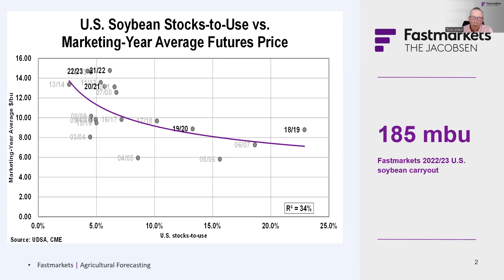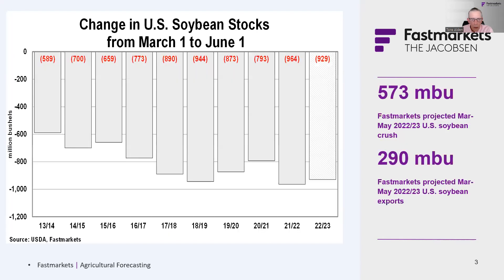This is generally the change from second quarter stocks to third quarter stocks. What we have built in is not necessarily a record drawdown from Q2 to Q3, but it's certainly historically high. It includes almost 575 million bushels of crush and 290 million bushels of exports.